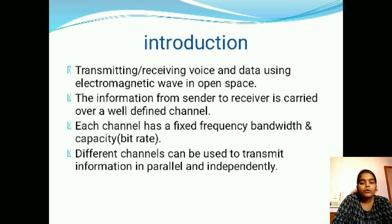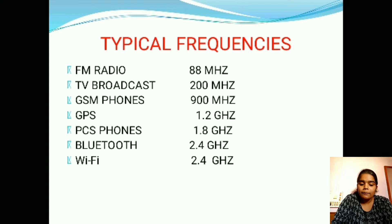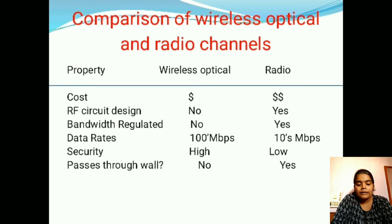Different channels can be used to transmit information in a parallel and independent way. The next point is typical frequencies. Some gadgets and their fixed frequencies: FM radio has 88 MHz, TV broadcast has 200 MHz, GSM phone (Global System for Mobile) has 900 MHz, GPS has 1.2 GHz, PCS phone has 1.8 GHz, Bluetooth has 2.4 GHz, and Wi-Fi has 2.4 GHz frequency.